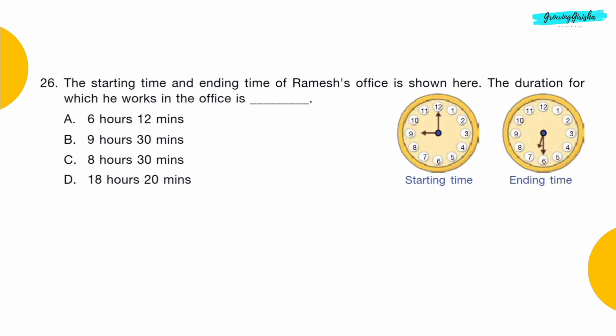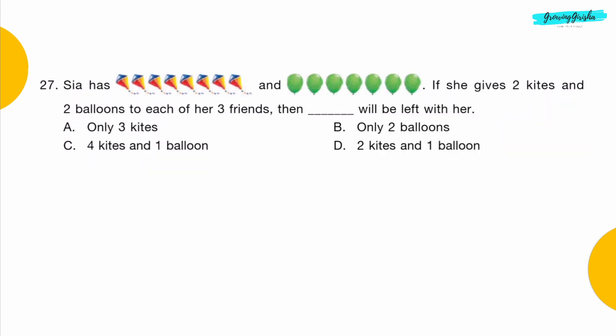Question 26: The starting time and ending time of Ramesh's office is shown here. The duration for which he works in the office is dash. Option B: 9 hours 30 minutes.